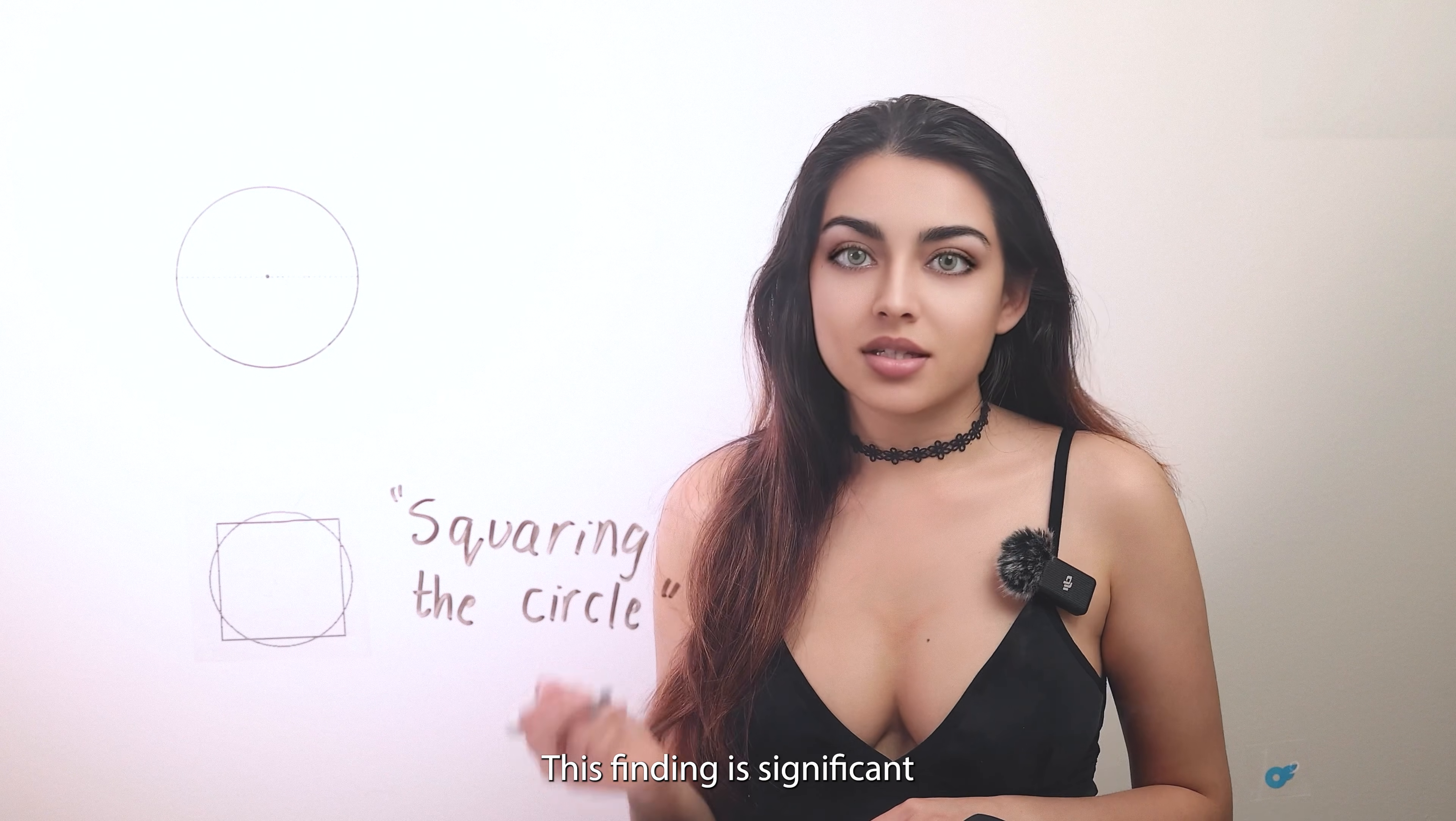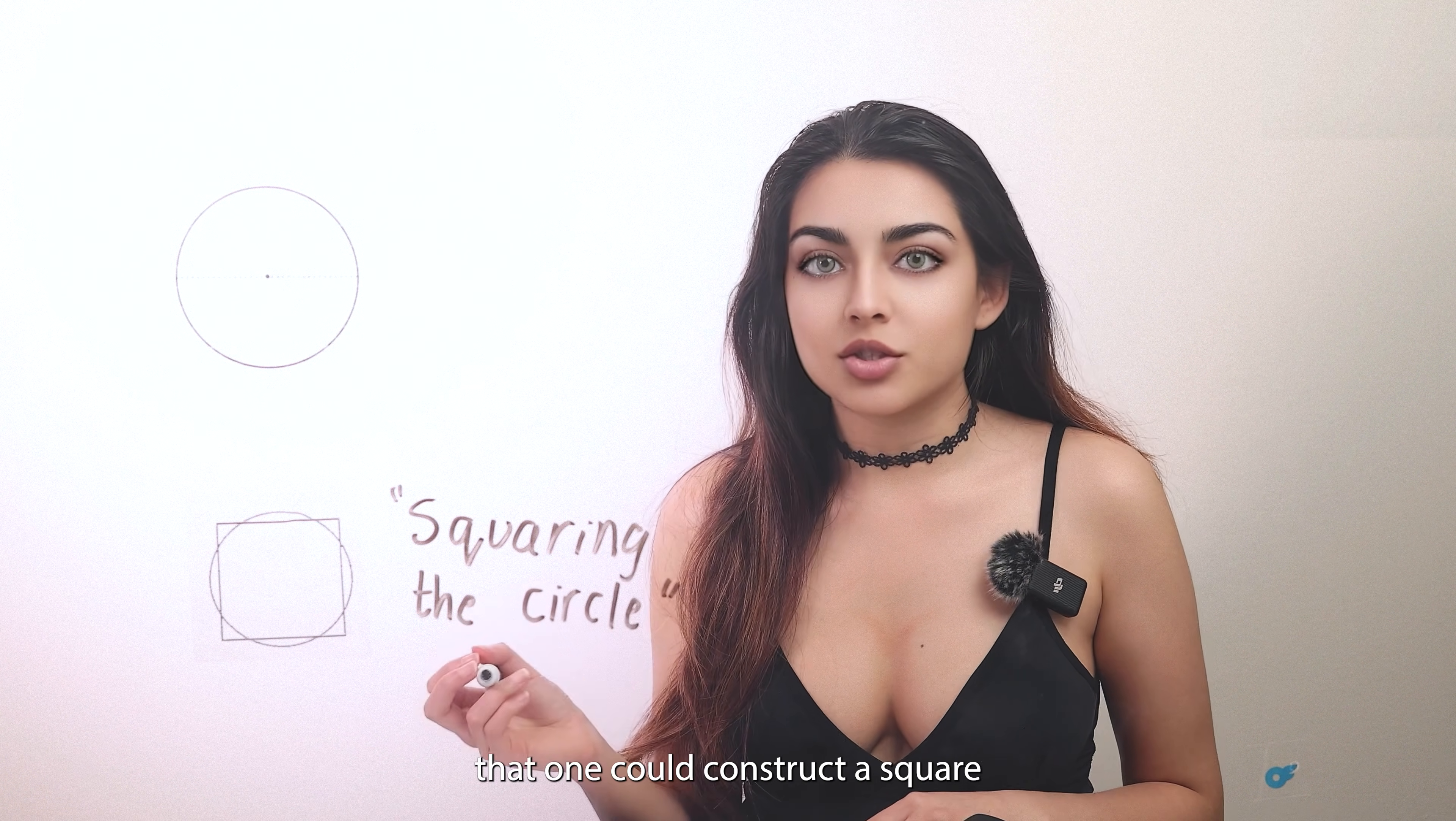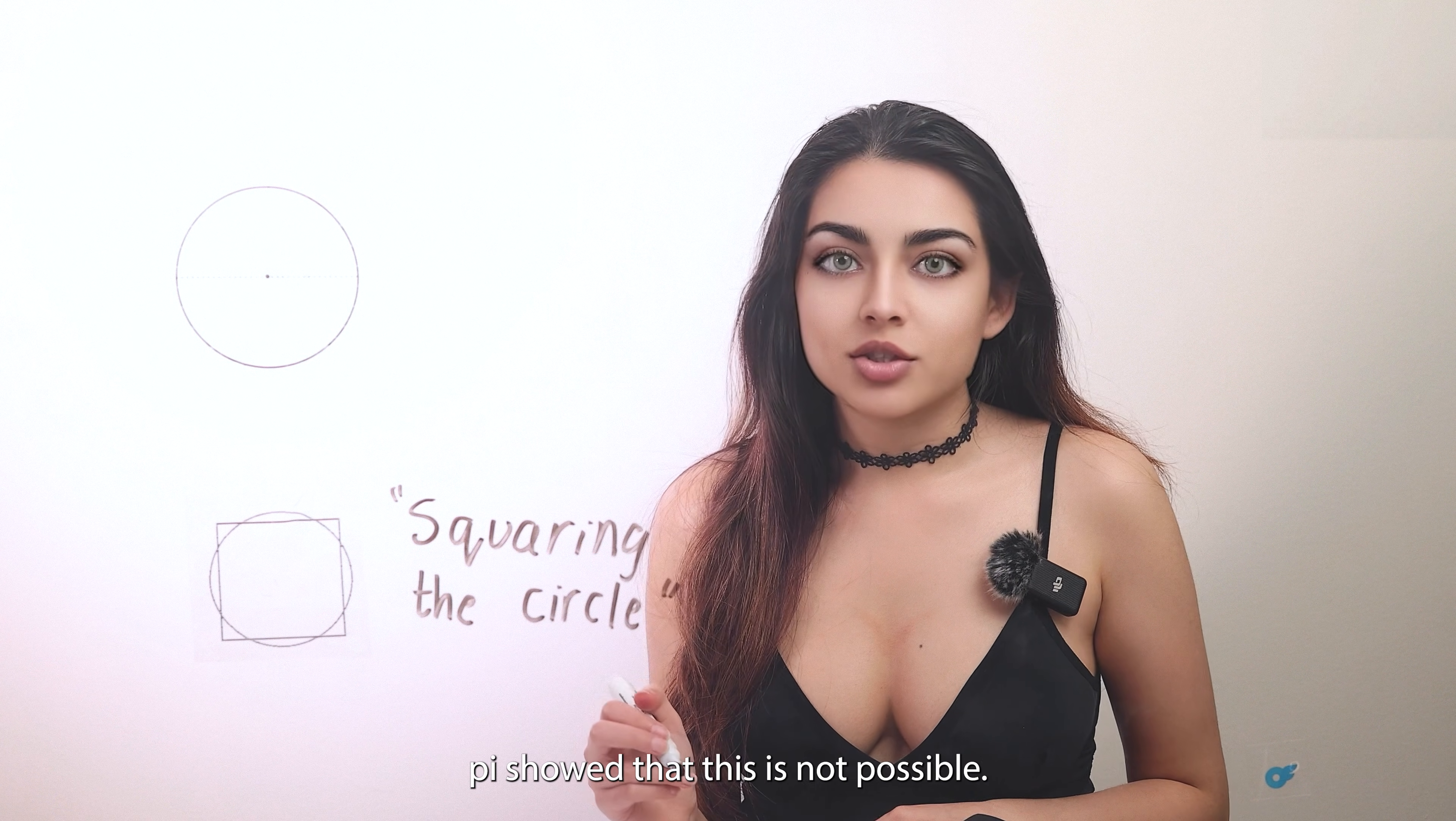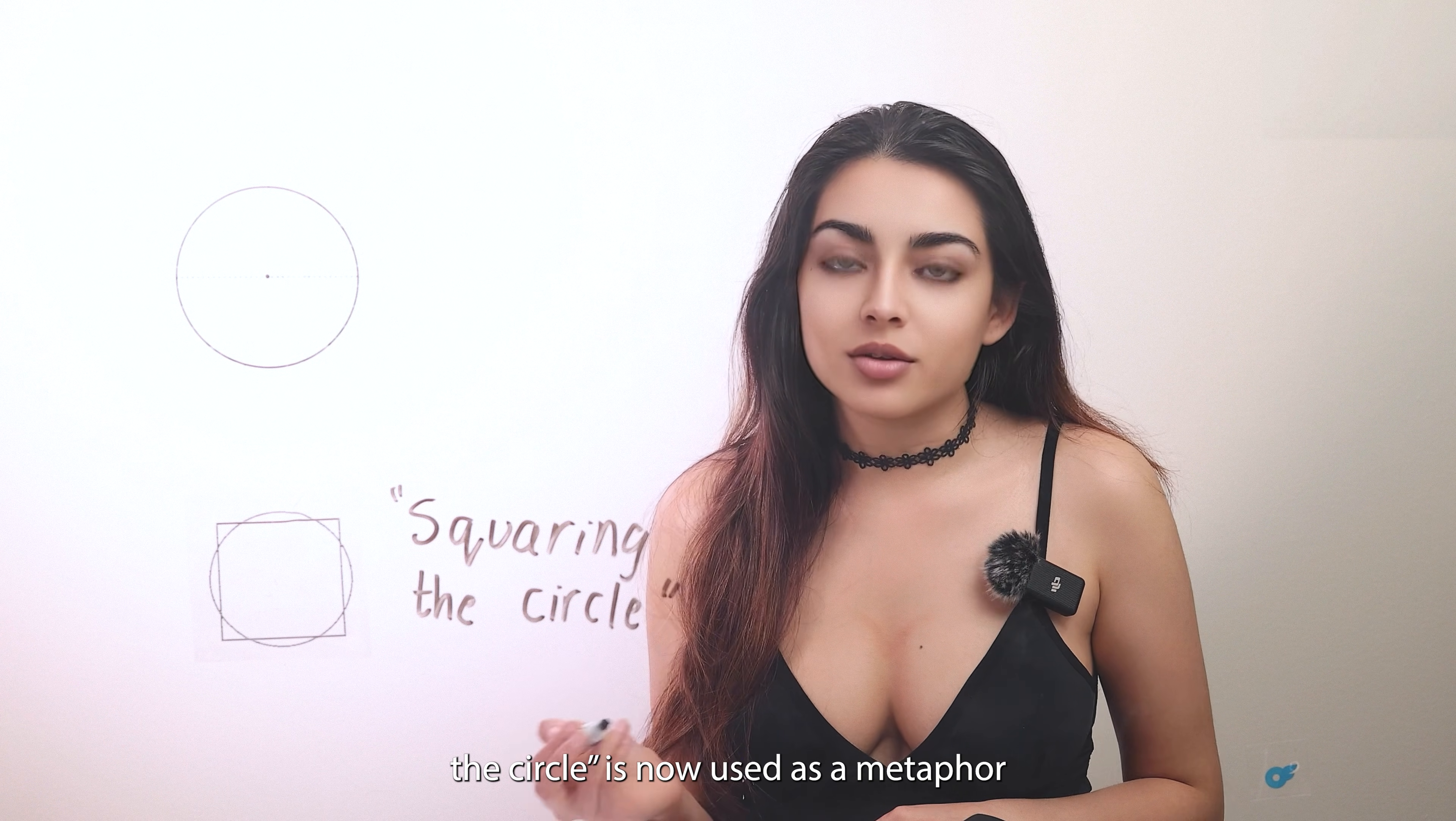This finding is significant because, until this point, it was believed that one could construct a square and a circle with equal area, known as squaring the circle. Proving the transcendence of pi showed that this is not possible, and the phrase squaring the circle is now used as a metaphor for trying to do something that is impossible.